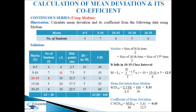Fourth column: midpoints — 2.5 for 0–5, 7.5 for 5–10, 12.5 for 10–15, 17.5 for 15–20, 22.5 for 20–25. Fifth column deviation d = m − M: 2.5−12.5=10, 7.5−12.5=5, 12.5−12.5=0, 17.5−12.5=5, 22.5−12.5=15 (ignoring negative signs).